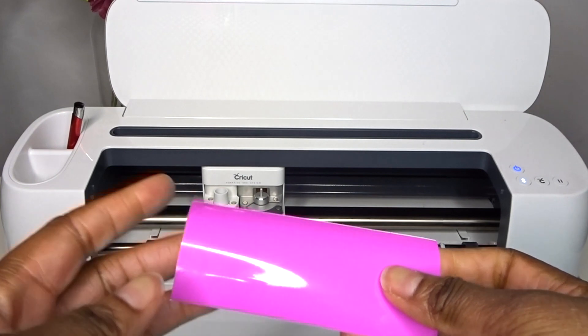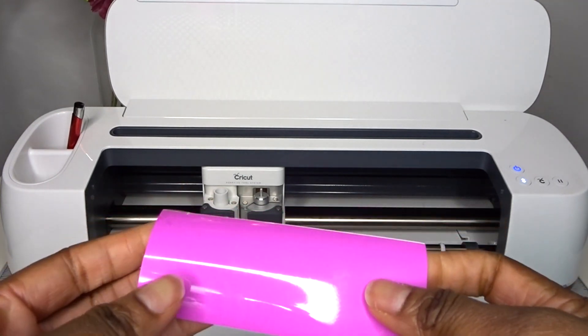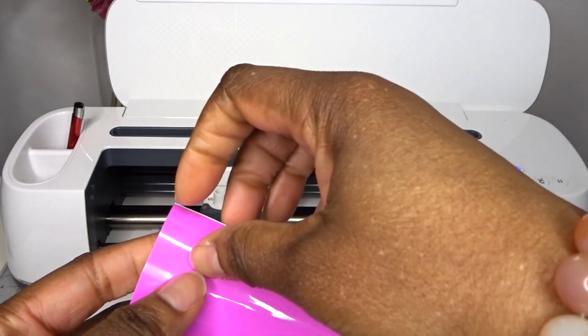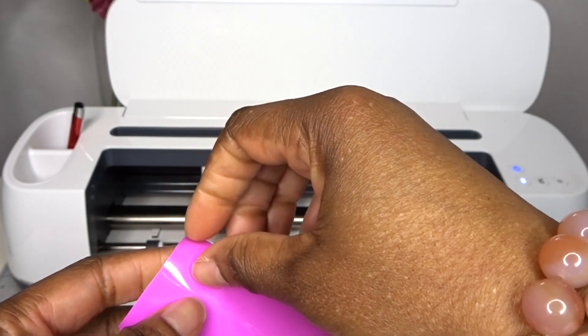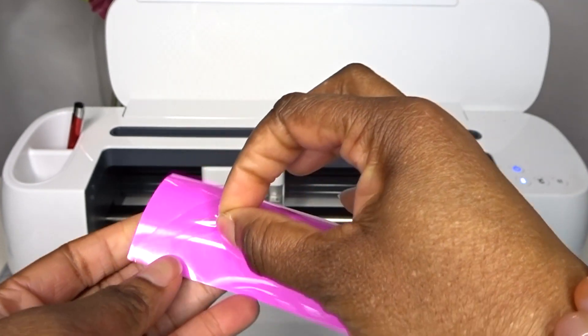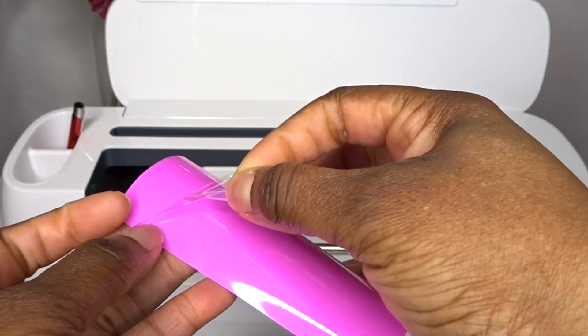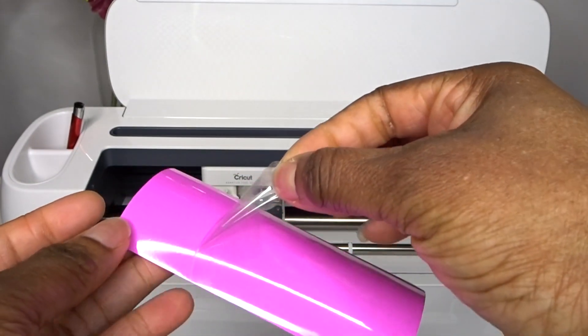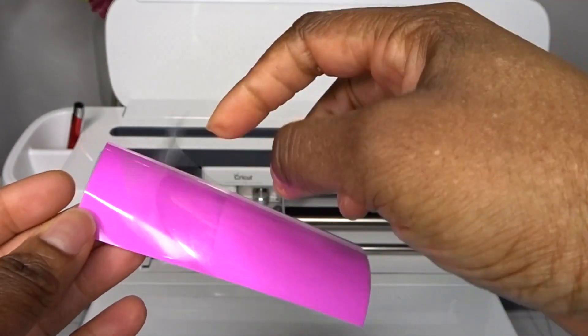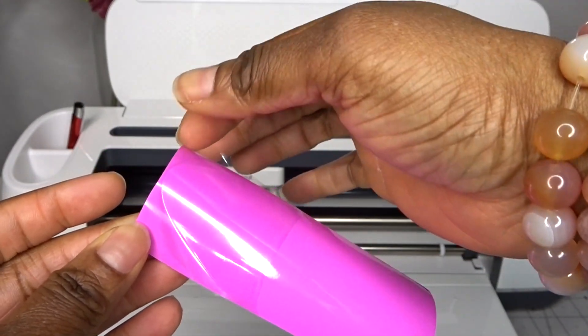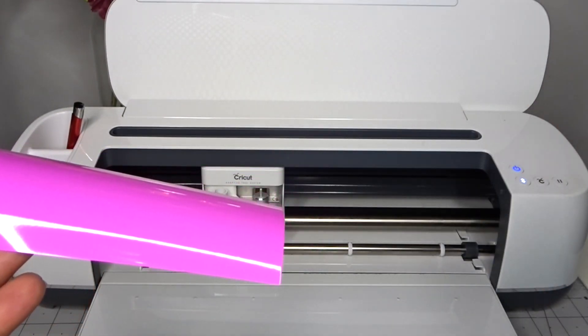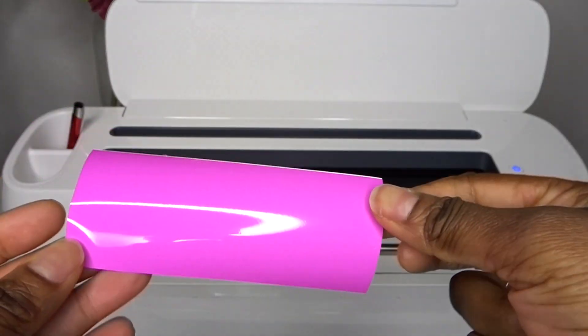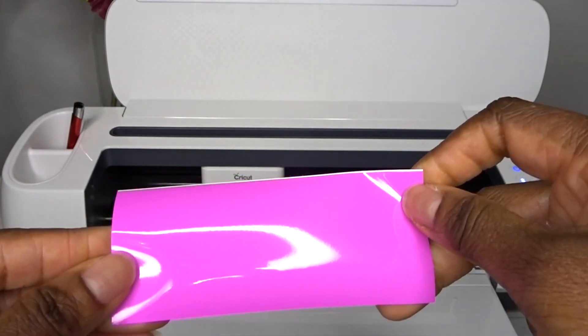Okay, so I have my vinyl here, but before I put it down on the mat there is a thin film that needs to be removed and it's quite fiddly to kind of grab a hold of. Just use your weeding pen to just pick the corner, which is what I did. So that needs to be removed and then I'm going to place this on the mat and cut.